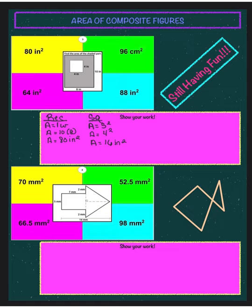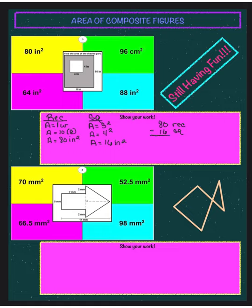This problem is a little different because it asks for the area of the shaded part. When we found the area of the rectangle, that entire region is included, but there's a square inside that is not shaded. So to find the shaded area, I take the area of the rectangle, which is 80 inches, and subtract the area of the square, which is not shaded, from the 80. That gives me 64 inches squared.